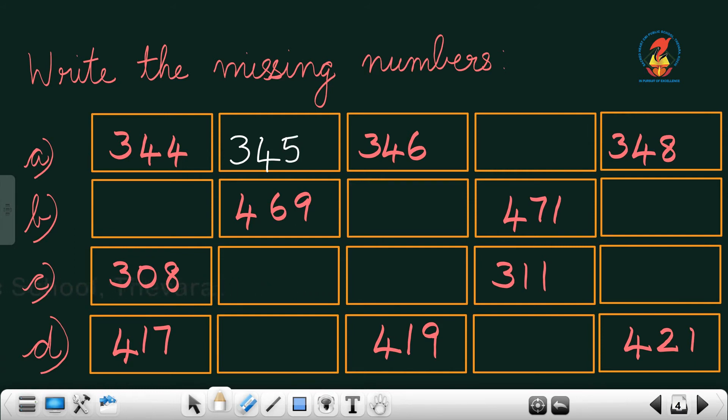The next box, it is written 346. After 346, 347. What comes after 347? 348. It is written there.